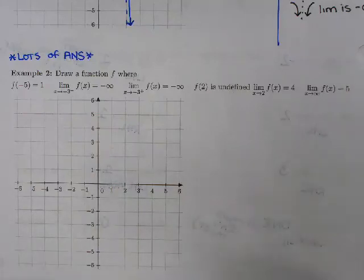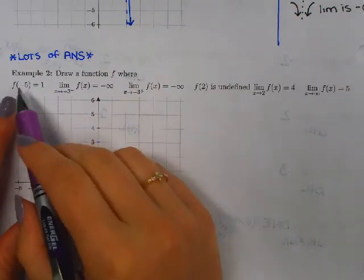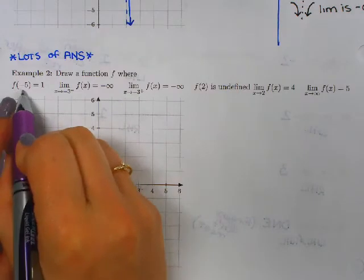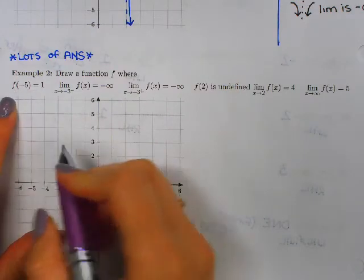Here we have our second example. We're just going to go through piece by piece like we did before. We want f of negative 5 to equal 1.